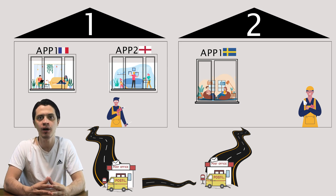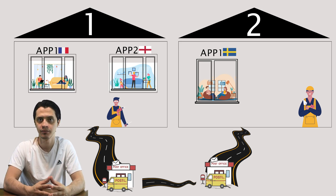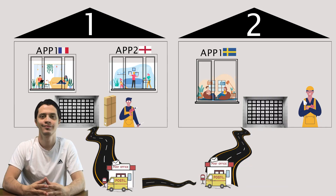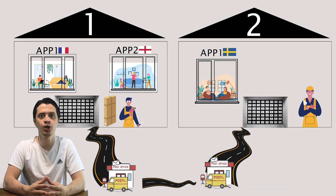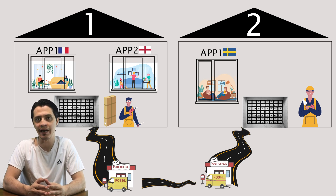The origin apartment could address the destination apartment uniquely with the postal code plus the number of the apartment. Now let's consider the two protocols that the parties could agree upon to send packages in terms of package size, delivery guarantee, and the arrival and order guarantee.